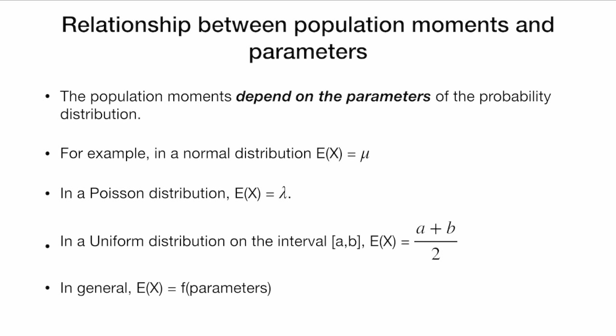What is the relationship between population moments and parameters? The population moments depend on the parameters of the probability distribution. The parameters describe an important aspect of the distribution, so it makes sense that the moments — the mean or the standard deviation — depend on those aspects. For example, in a normal distribution, we can express the expected value, the first moment, as the parameter mu.